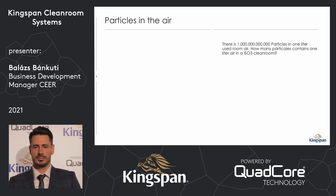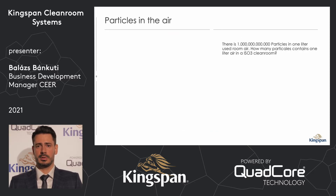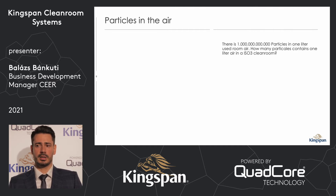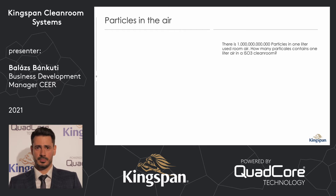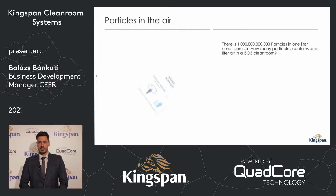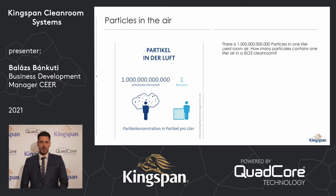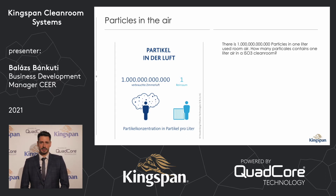Let me ask a question. If there is one thousand billion particles in one litre of used room air, how many particles does one litre of air contain in an ISO-3 cleanroom? The answer is one. This gives you a really good comparison of how clean a cleanroom is compared with a normal environment.